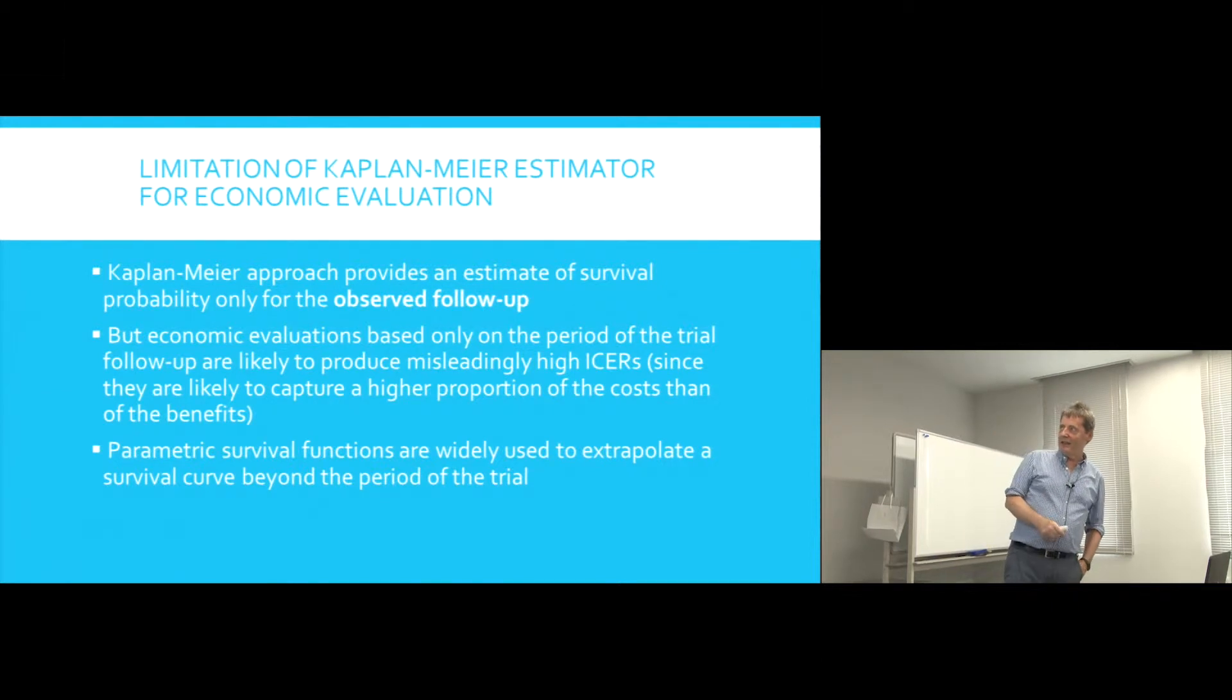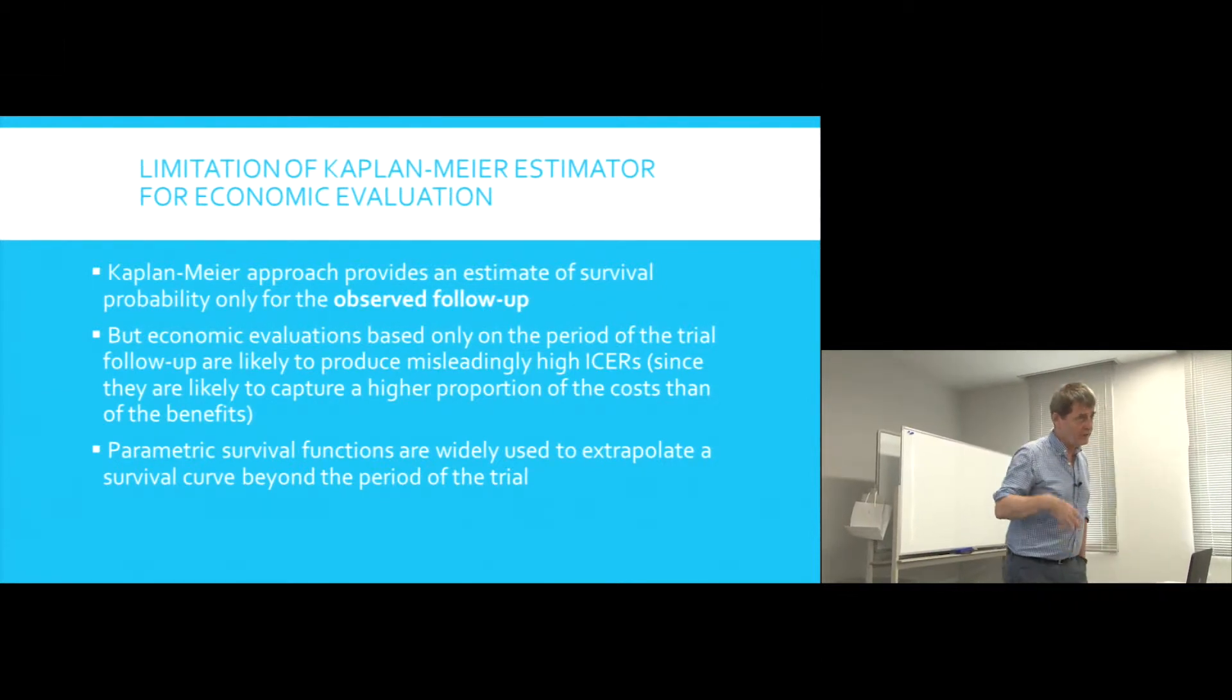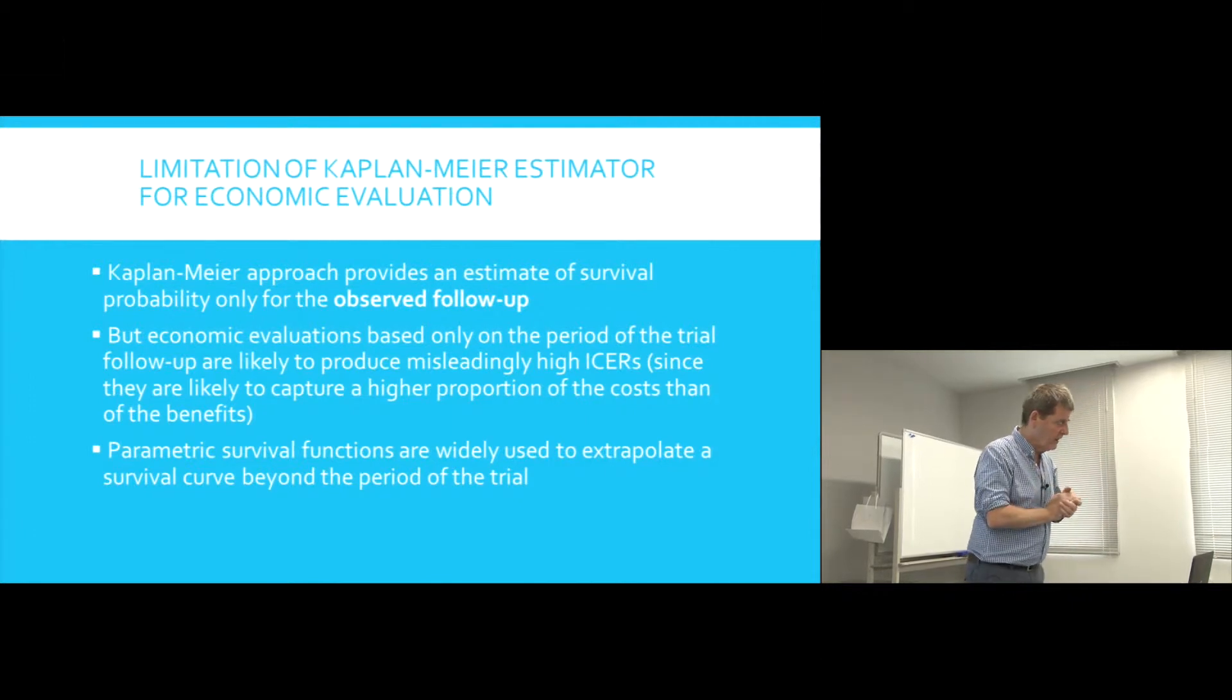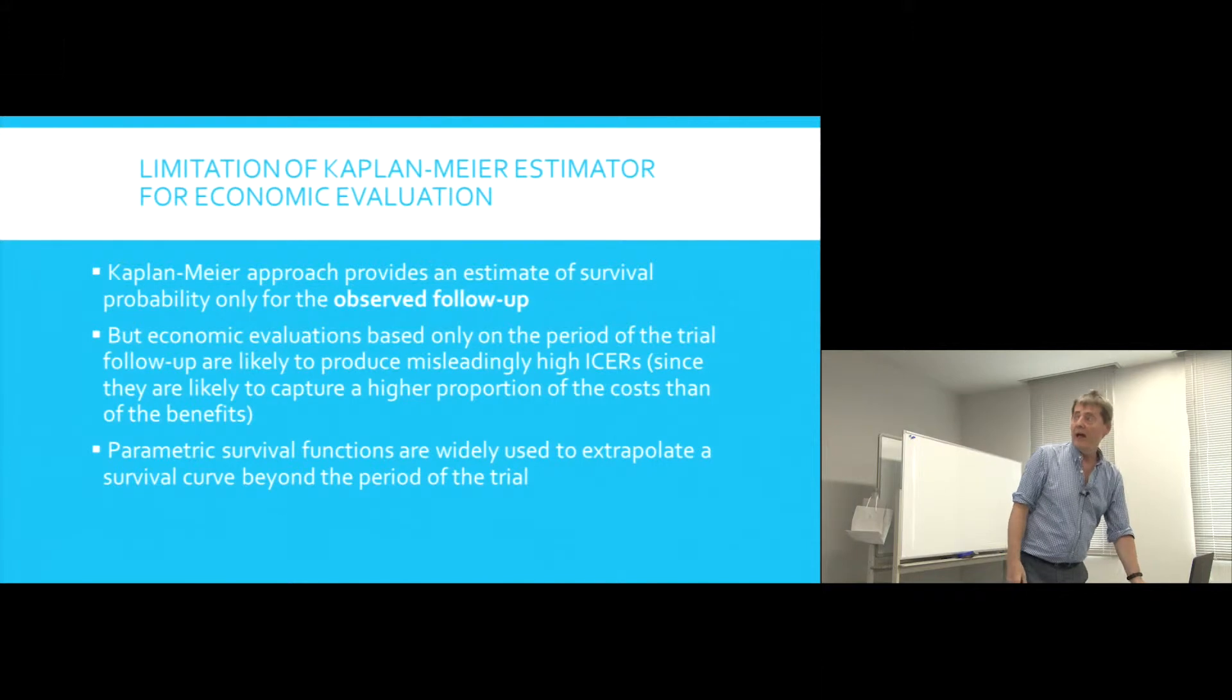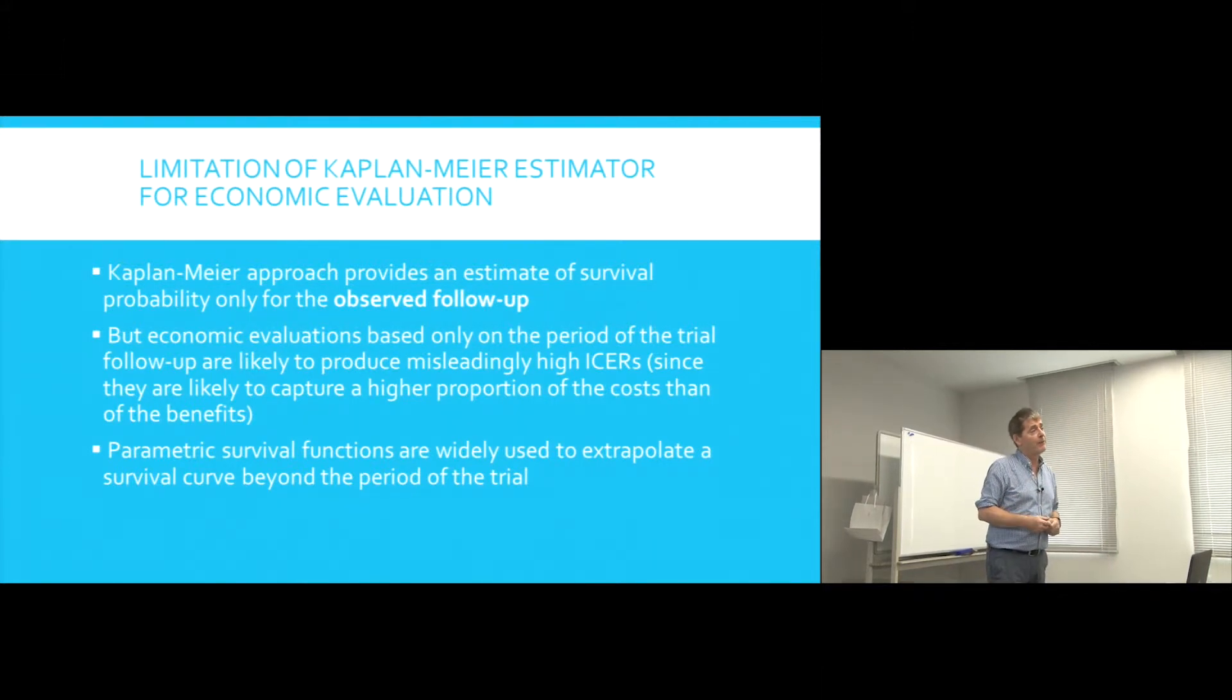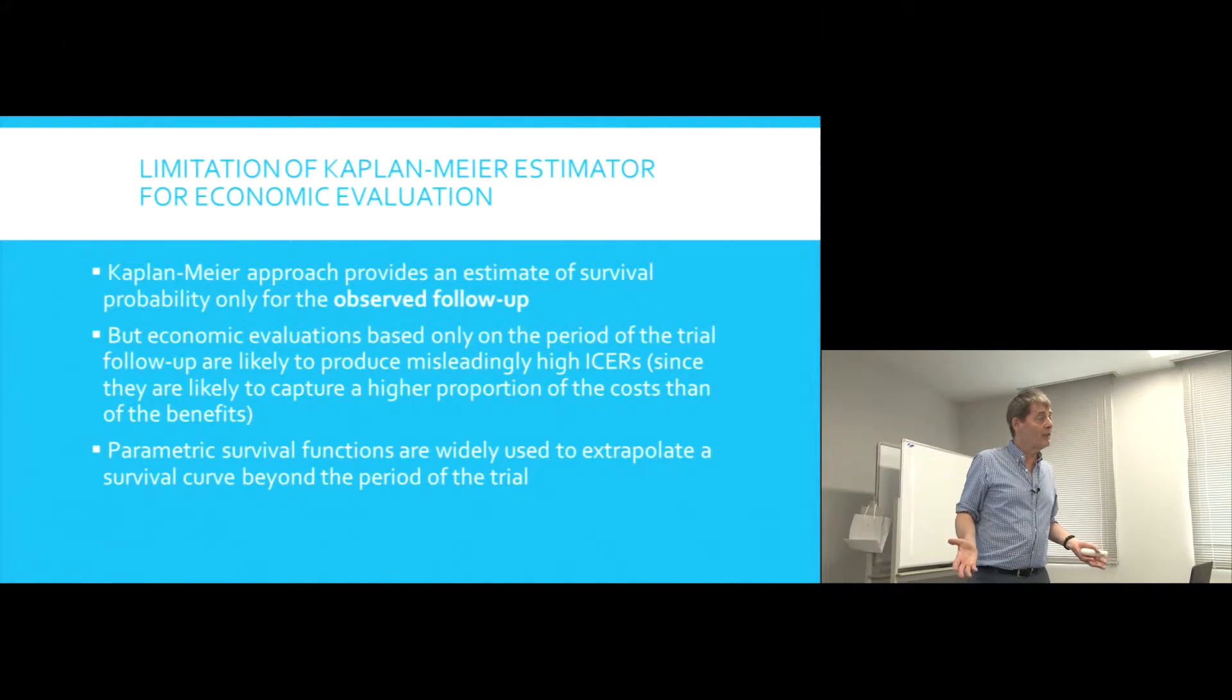The key point is, while Kaplan-Meier takes censoring into account this problem that we haven't observed, everyone die and so we don't know where the survivors died. The key point about Kaplan-Meier data is it can't really help us in an economic evaluation.